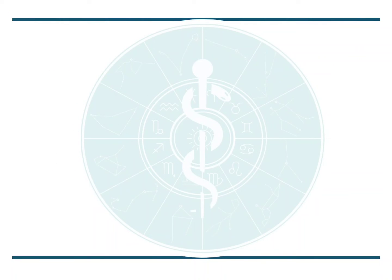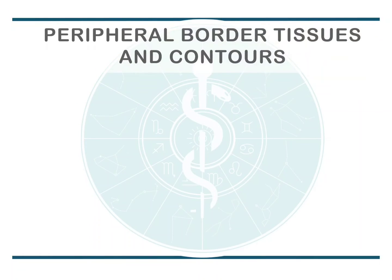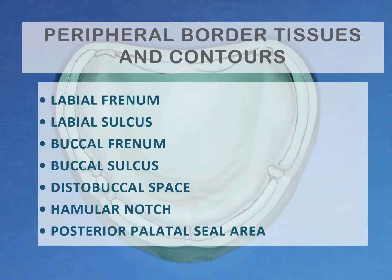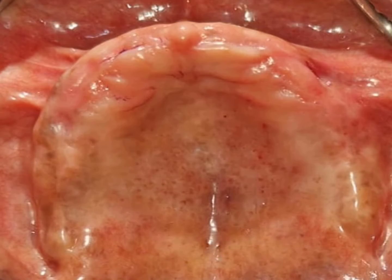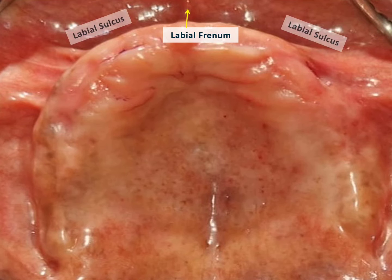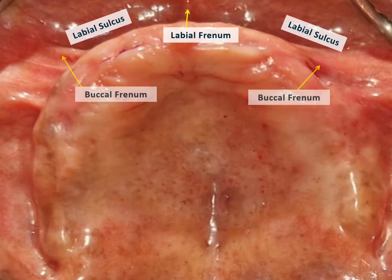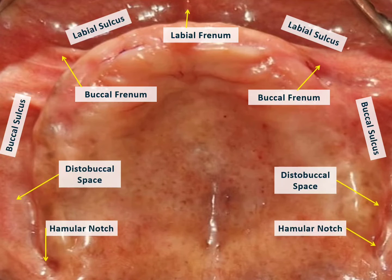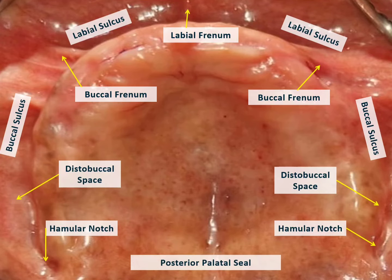Moving on to the peripheral border tissues and contours — these are the limiting structures and they include the labial frenum, the labial sulcus, the buccal frenum, buccal sulcus, the dystobuccal space, the hamular notch, and the posterior palatal seal area.